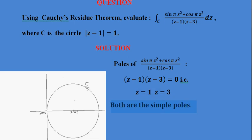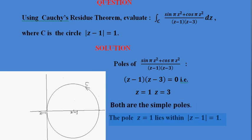Next, we check which of these two poles lies inside the closed circle. If none of the poles lie inside, the integral value will be zero. Since z = 1 is the center of this circle, it lies inside. And z = 3 lies outside the circle. So only z = 1 lies within this circle.